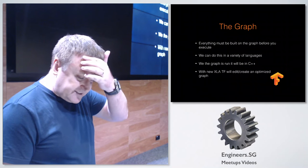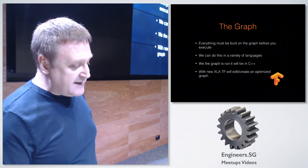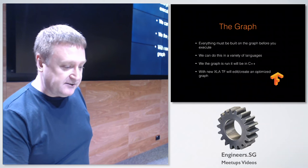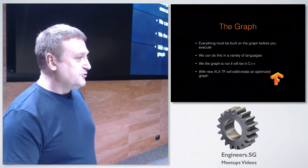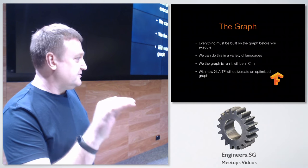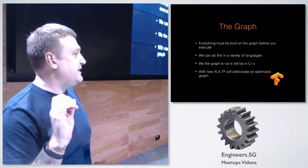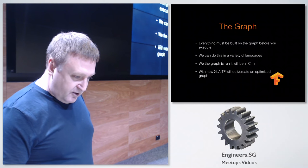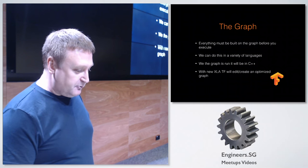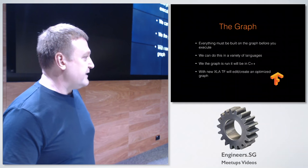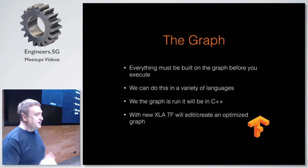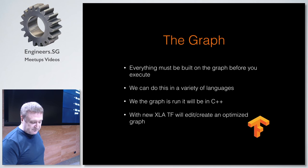Everything has to be built on a graph before you can execute. Unlike normal code, you don't just write a piece of code and print out the result of a mathematical operation. The graph can be written in different languages — they've added Java as an experimental language overnight, and also Go. There are quite a number of languages you can write your graph in.